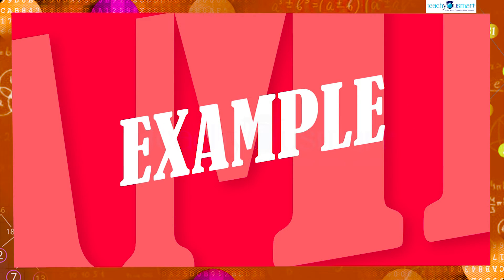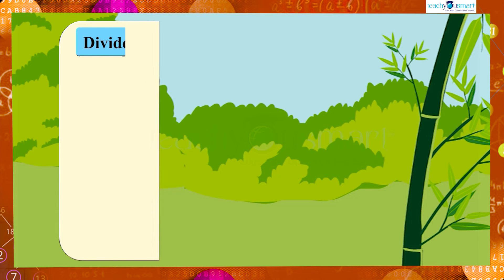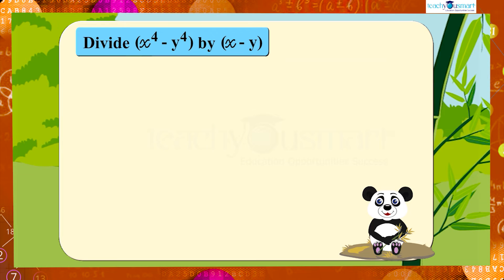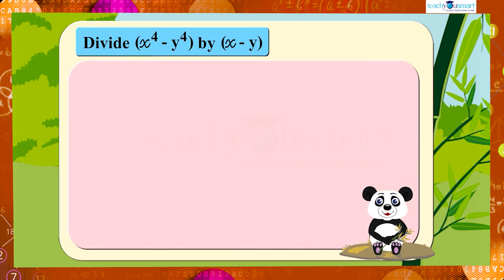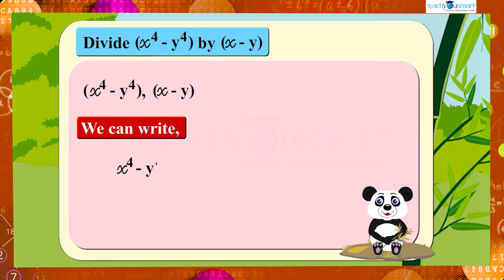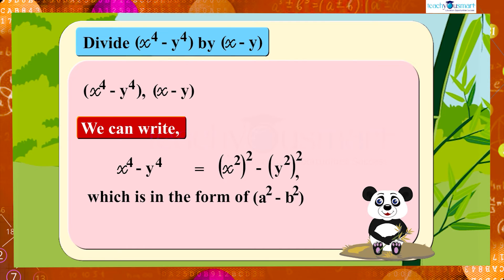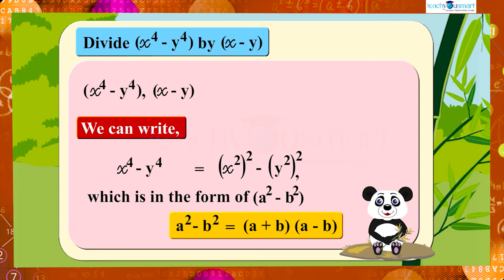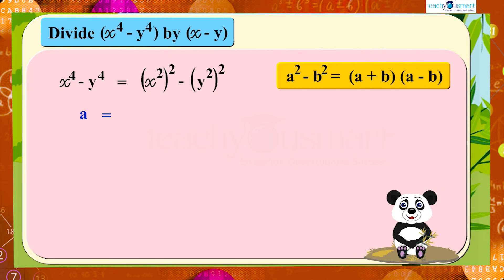Let's see another example. Divide x⁴ − y⁴ by x − y. We can write x⁴ − y⁴ as (x²)² − (y²)², which is in the form a² − b². We know a² − b² = (a + b)(a − b). From this, a = x² and b = y².